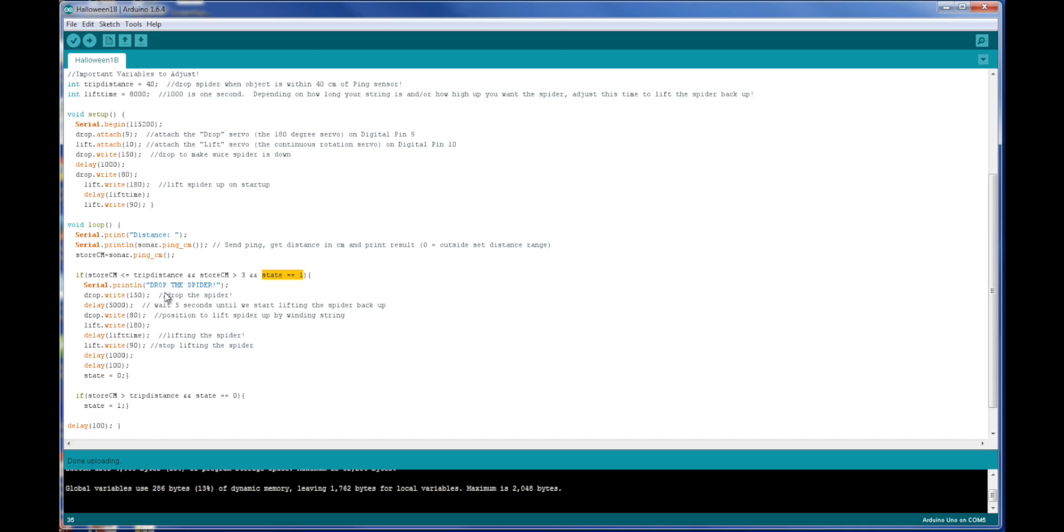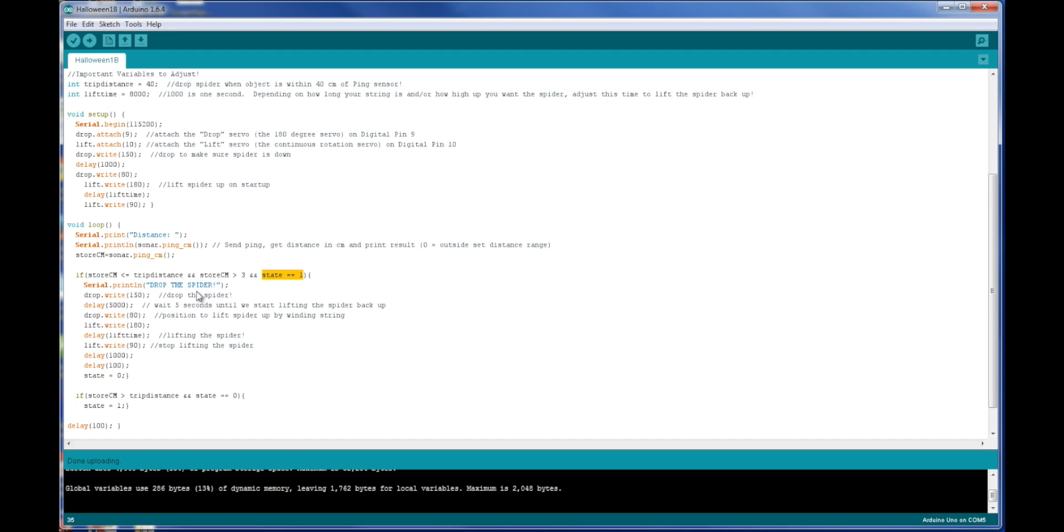And then state equals one. What we're doing here is we're preventing the spider from being dropped again if people are still standing in front of the sensor. So in other words, we go through and we drop the spider, and here we set state equals to zero. So it's not going to let this spider drop again until people step away from the sensor, and meaning they're back in front of it, they're further back than the trip distance, then we can set the state back equal to one. And that will let this run the next time somebody approaches it.